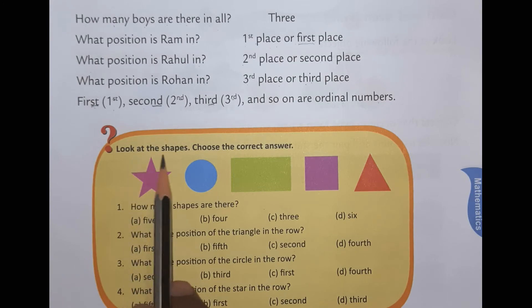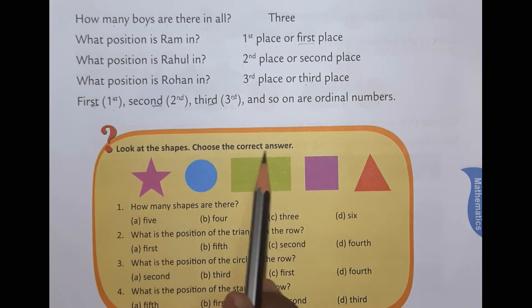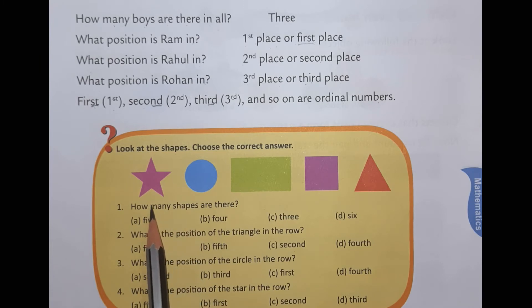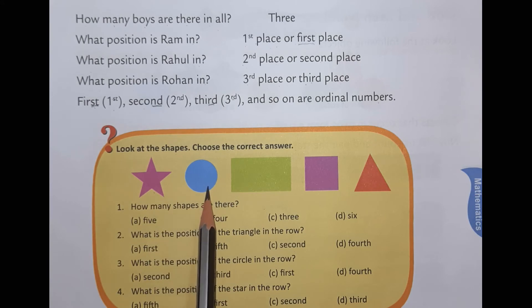So now you can see, look at the shapes and choose the correct answer. So here you can see star is there, circle is there, rectangle, square, and triangle.